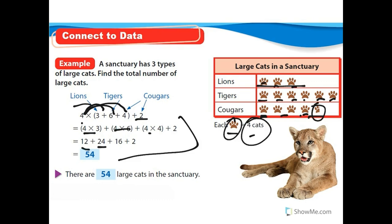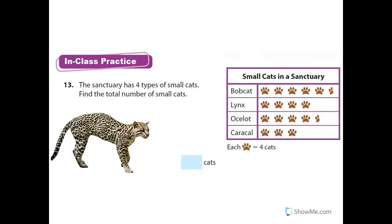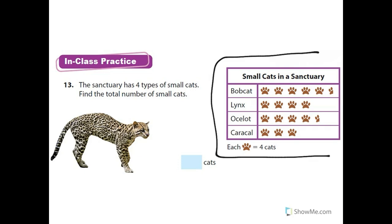Four times three is 12, four times six is 24, four times four is 16, and then we add two — giving 54 large cats in the sanctuary. For number 13, read the problem, check the table, find the total number of small cats using any property you want.